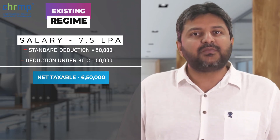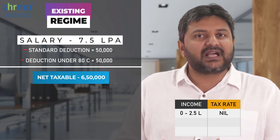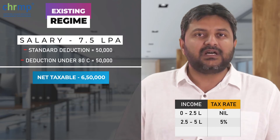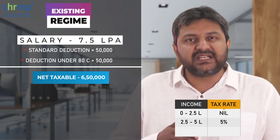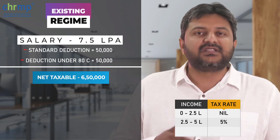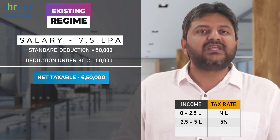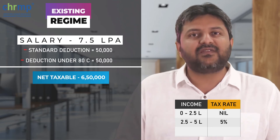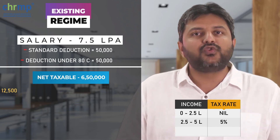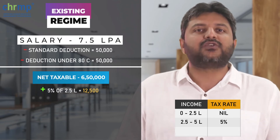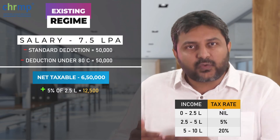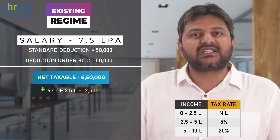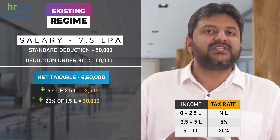Now calculating the income tax under the first slab: 0 to 2.5 lakh — no tax applies. Under 2.5 to 5 lakh, 5% tax applies. I would want viewers to note that under Section 87A, which allows tax exemption under the bracket of 2.5 to 5 lakh, it is applicable only when the net taxable income is up to 5 lakhs. In this case, net taxable income is more than 5 lakh, so 5% tax will apply, amounting to 5% of 2,50,000 which is Rs. 12,500. The next slab of 5 to 10 lakh is at 20%. As the earnings are 6,50,000, the net taxable amount would be 20% of 1,50,000, which is Rs. 30,000.